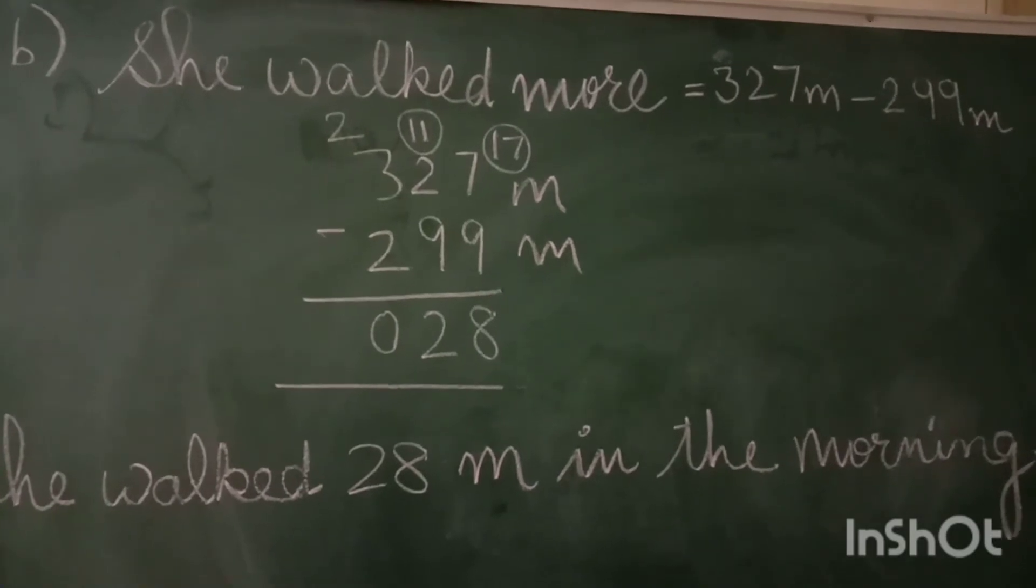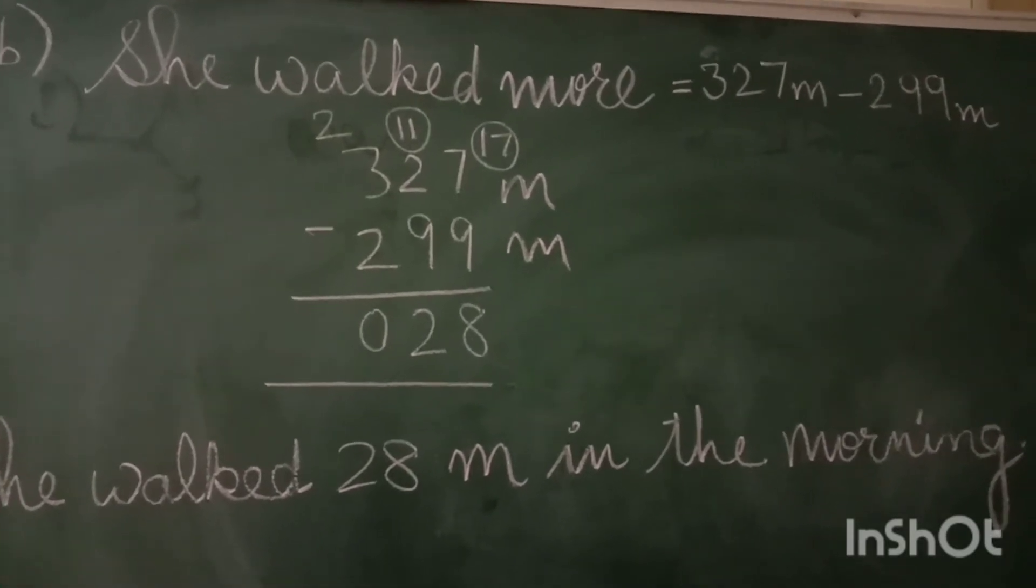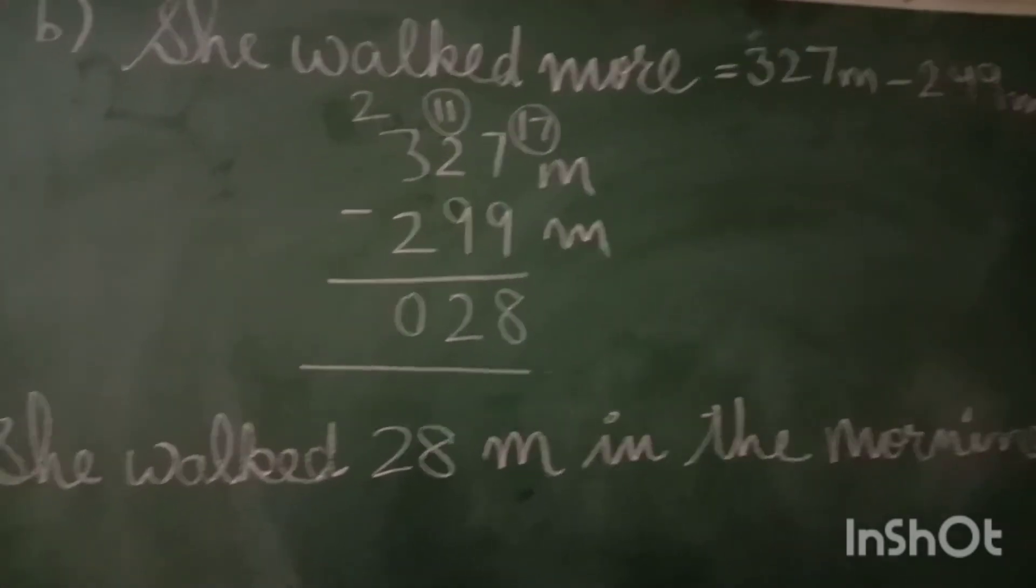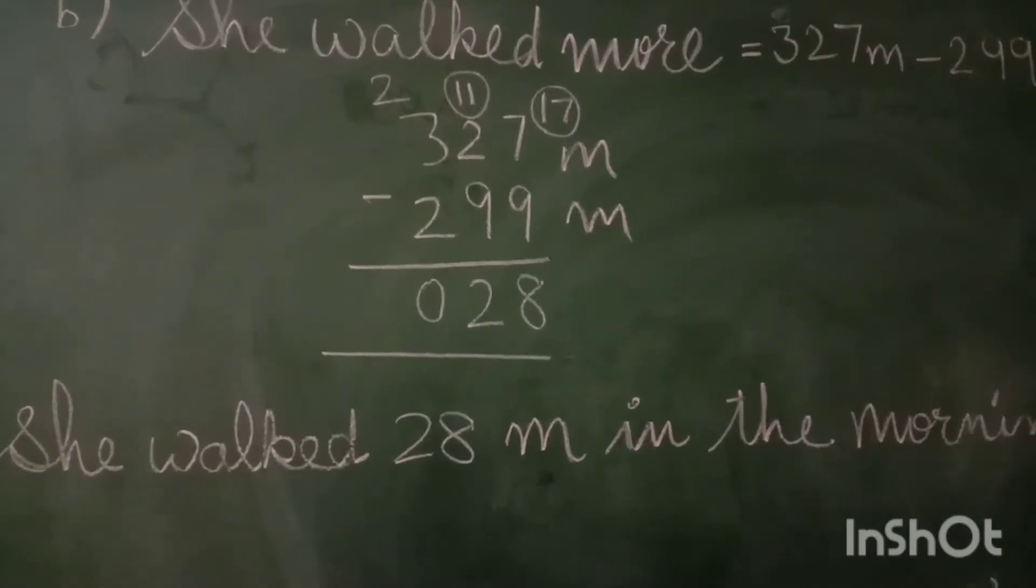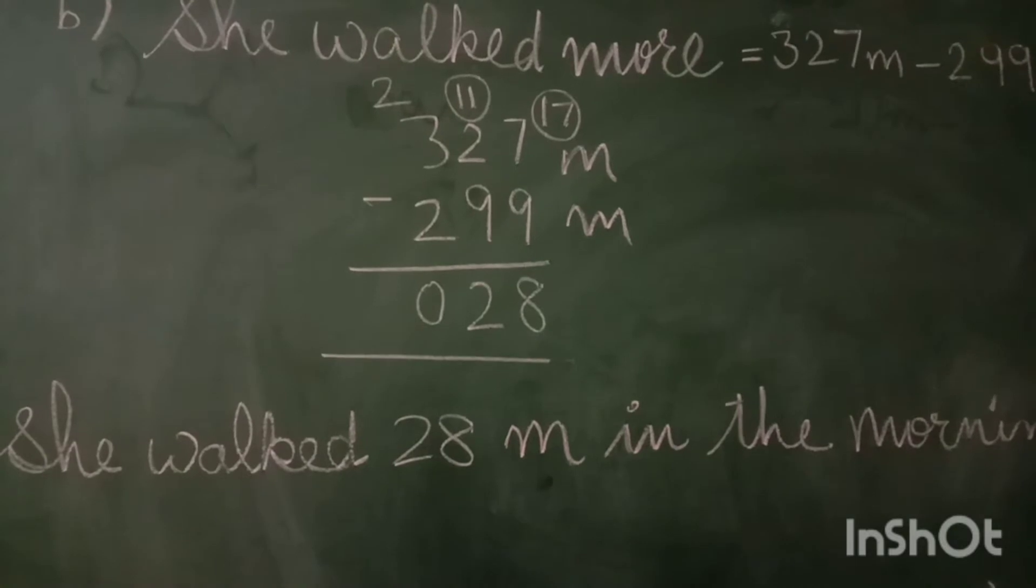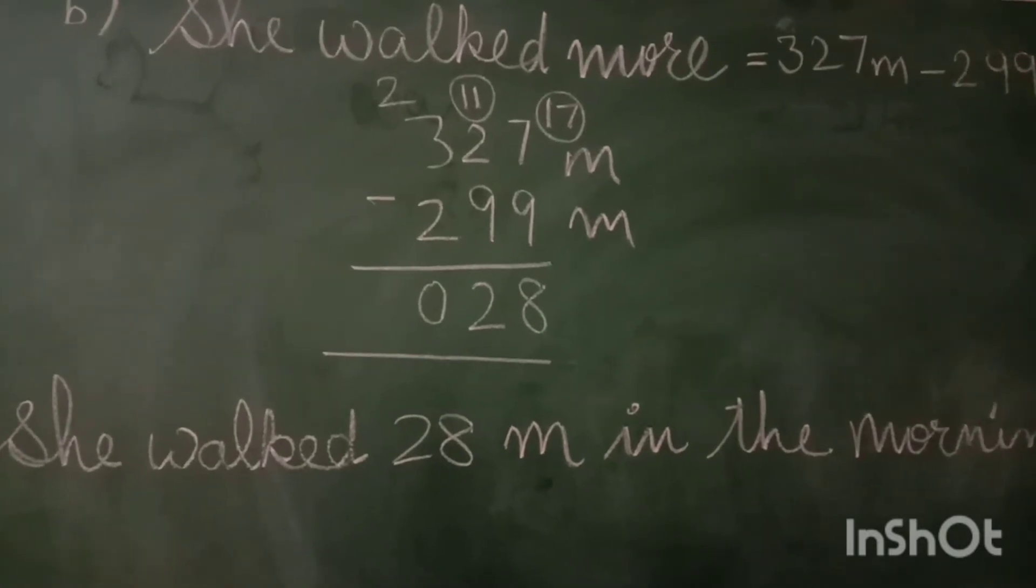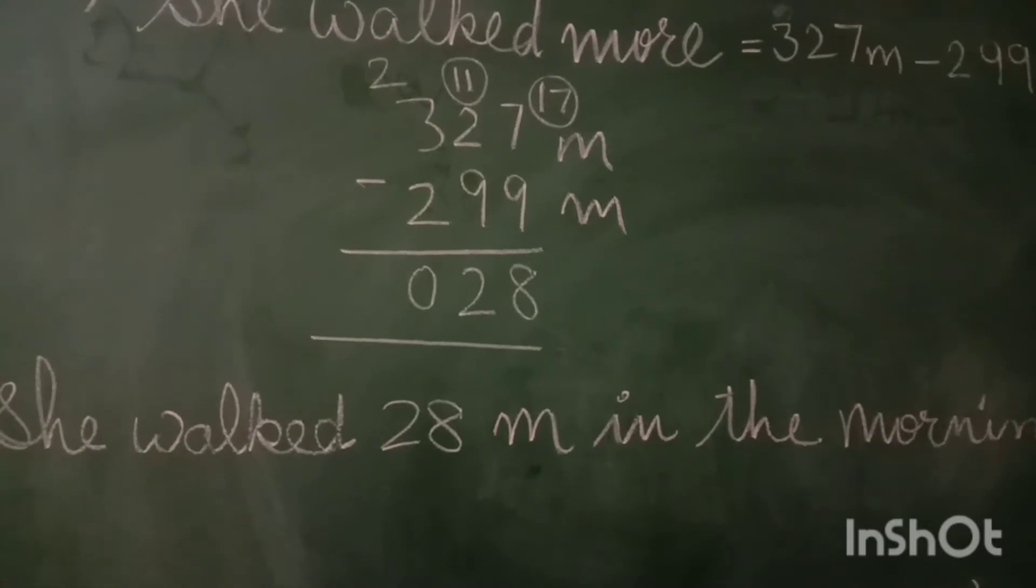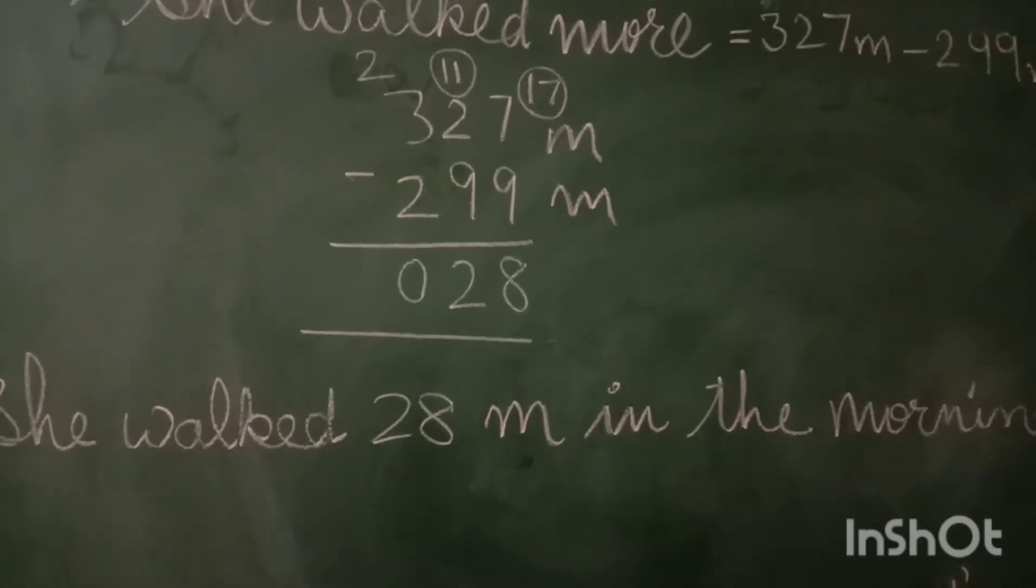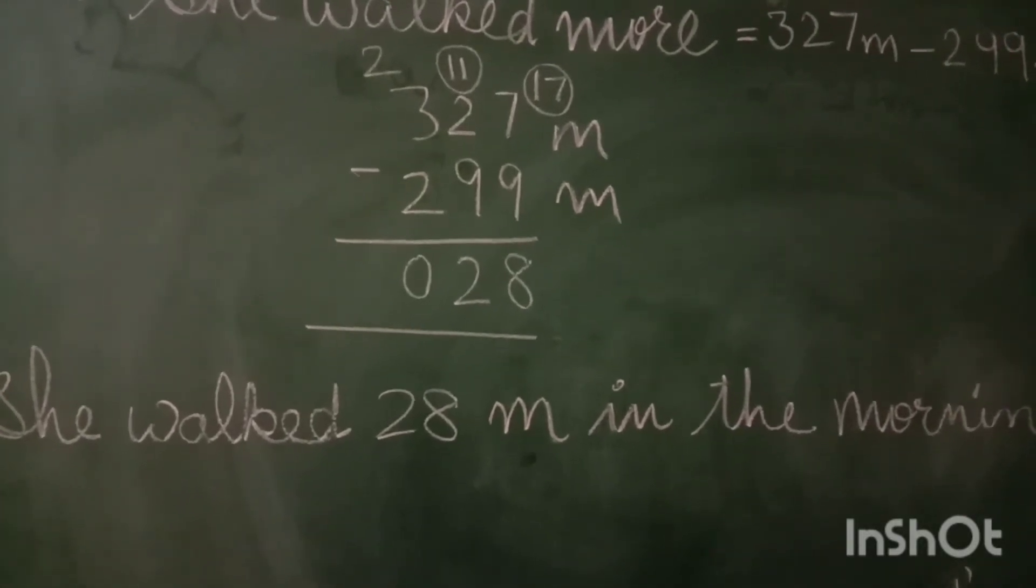327 meters minus 299 meters. Subtraction, you know, you have already done borrowing. You have to take the tens from the nearby number and solve the sum.